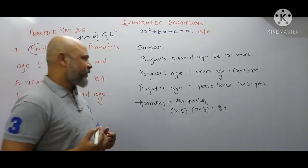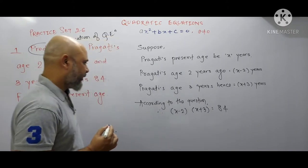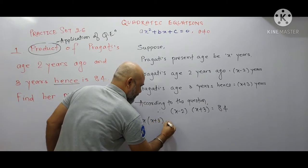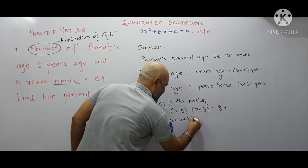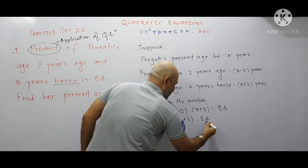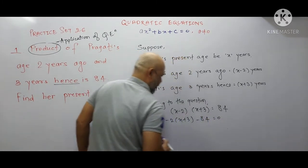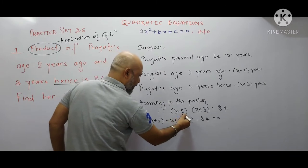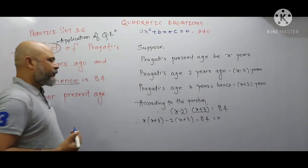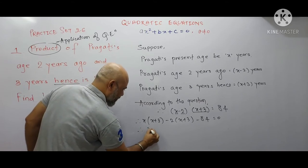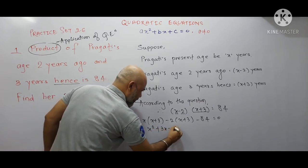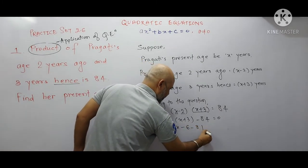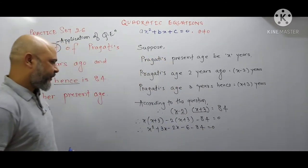Now we will solve this to get a quadratic equation. Multiplying out: x(x+3) minus 2(x+3) equals 84. Transposing 84 to the left-hand side gives minus 84, so this equals 0. Expanding: x² + 3x minus 2x minus 6 minus 84 equals 0.